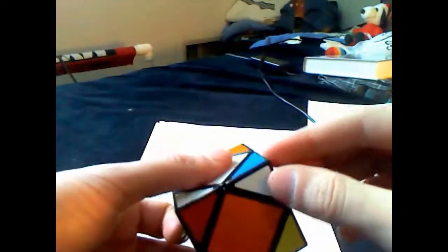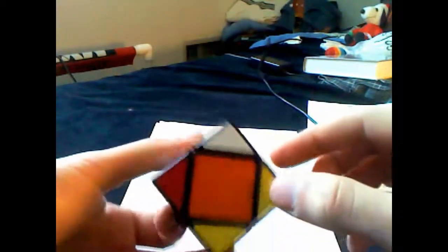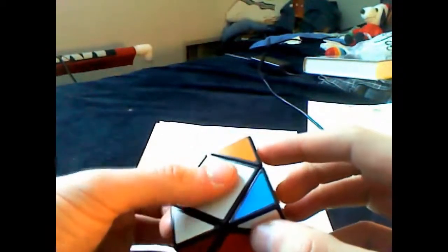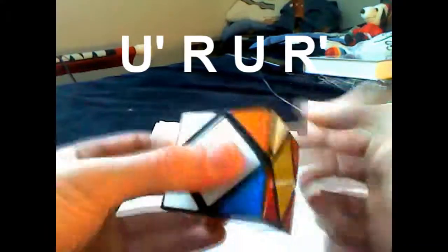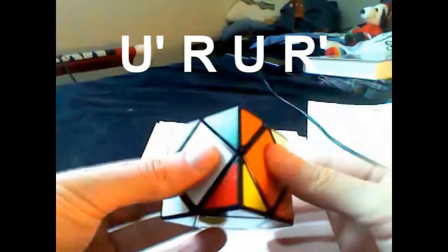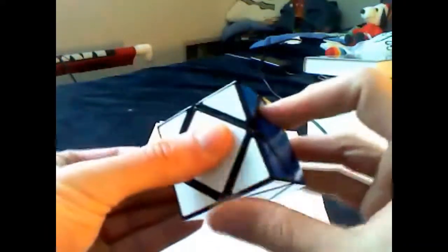Here's a case where we have two corners where they're in the right spots but they're oriented incorrectly, like this. All we need to do is U prime, R, U, R prime.